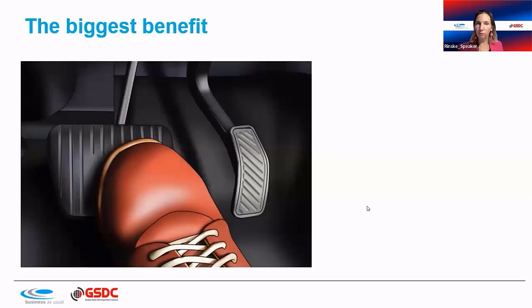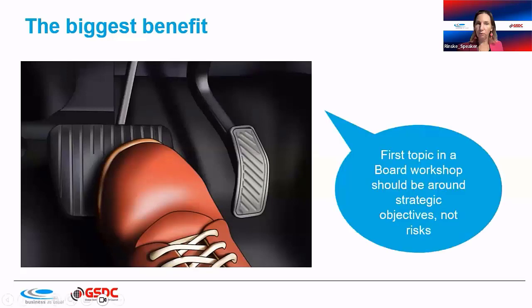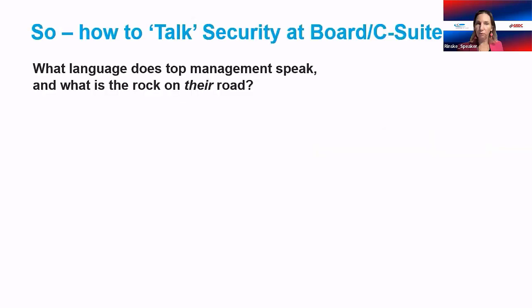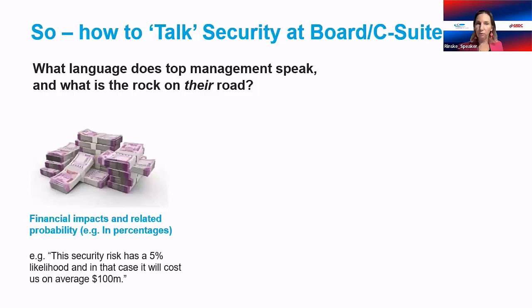When talking security at the board and C-suite level, focus on three things: what is the rock on their road — not yours; financial impacts and probabilities expressed in percentages; and reputational impact, governance, and compliance. Translate security risk into their language: a five to ten percent likelihood of a hundred-million-dollar loss, or a risk to reputation based on recent comparable cases.